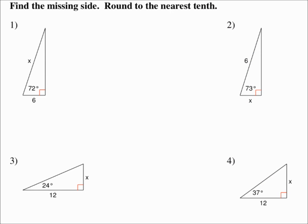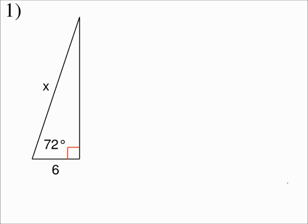Find the missing side — round to the nearest tenth. We have a similar situation here because we're looking for a value in a triangle, but now it's a side length instead of an angle measure. Everything is worked out pretty much the same way: identify the sides as opposite, adjacent, or hypotenuse with respect to the acute angle you're working with, decide whether to use sine, cosine, or tangent, then substitute in and solve.